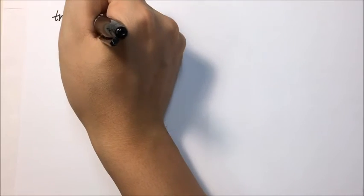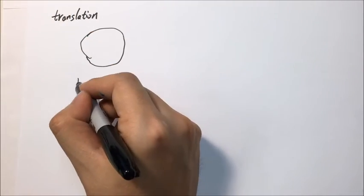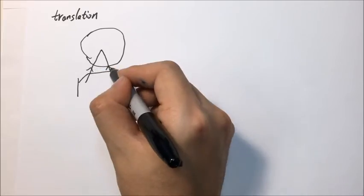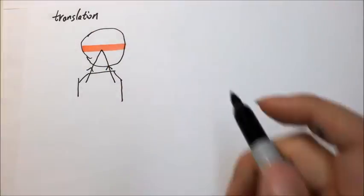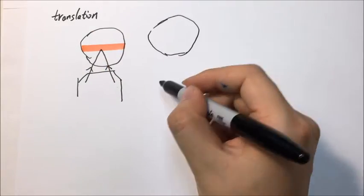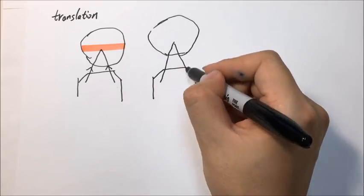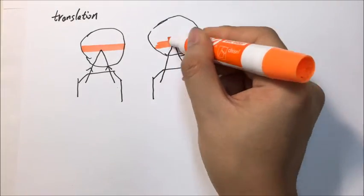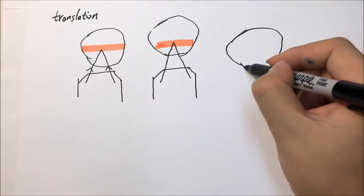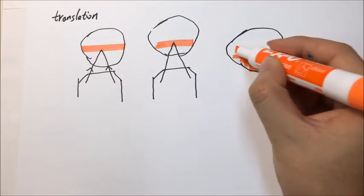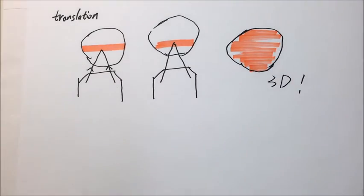You might be confused why we need to do translation. Every time we do measurement, we actually capture neurons in a particular plane. Then, moving the specimen a little bit, we can capture neurons in another plane. Step by step, we can obtain all the neurons in this specimen and have a total 3D reconstruction.